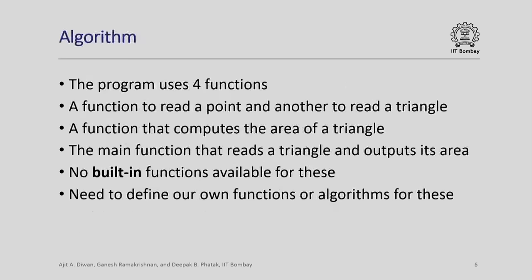This algorithm also uses four functions: a function to read a point and another to read a triangle, because they are not built-in types. In this case, we did not need to print a point or print a triangle, so we did not write any printing function, but in general for custom types you will need to write functions for printing them also. Then you need a function to compute the area of the triangle. You need to figure out what formula to use — that is something independent of the program — and once you do that, you can write a program to compute the area. The main function simply reads the triangle and outputs its area.